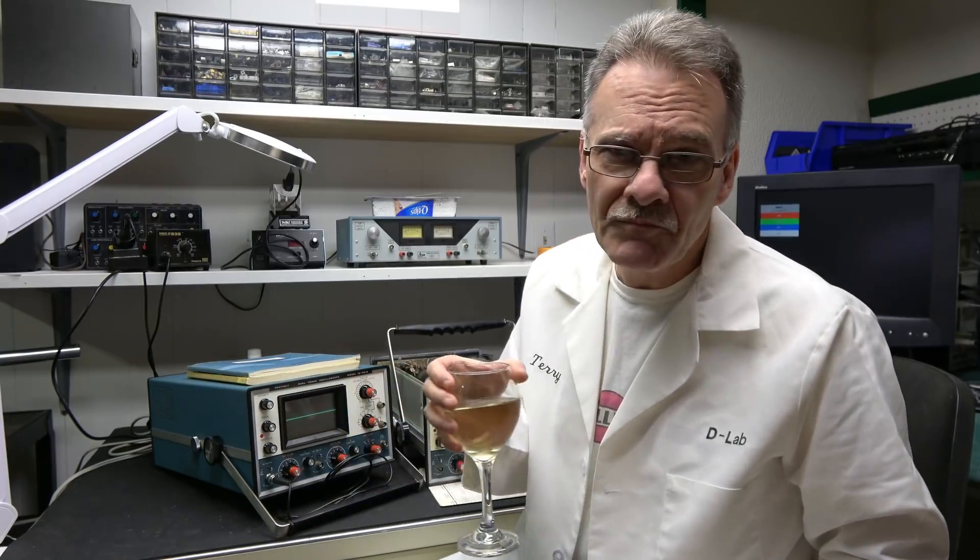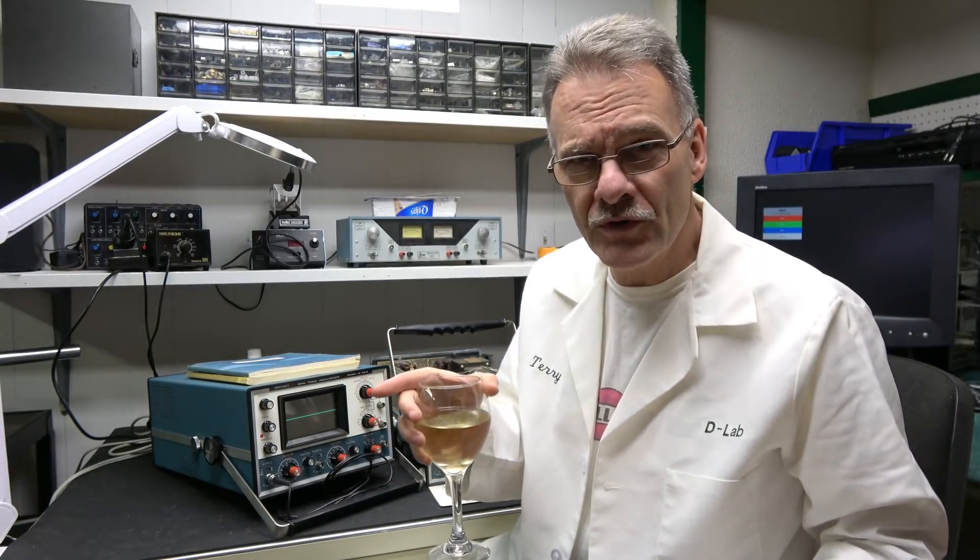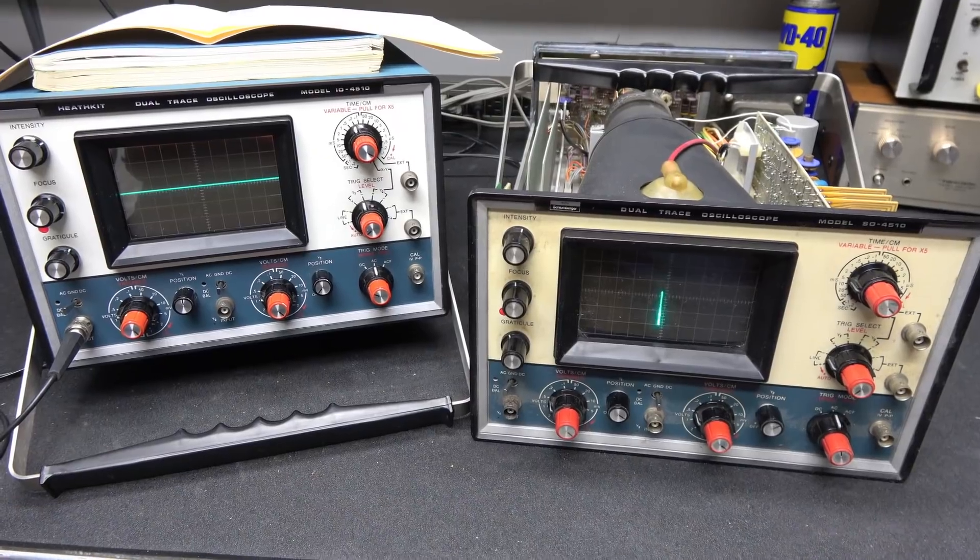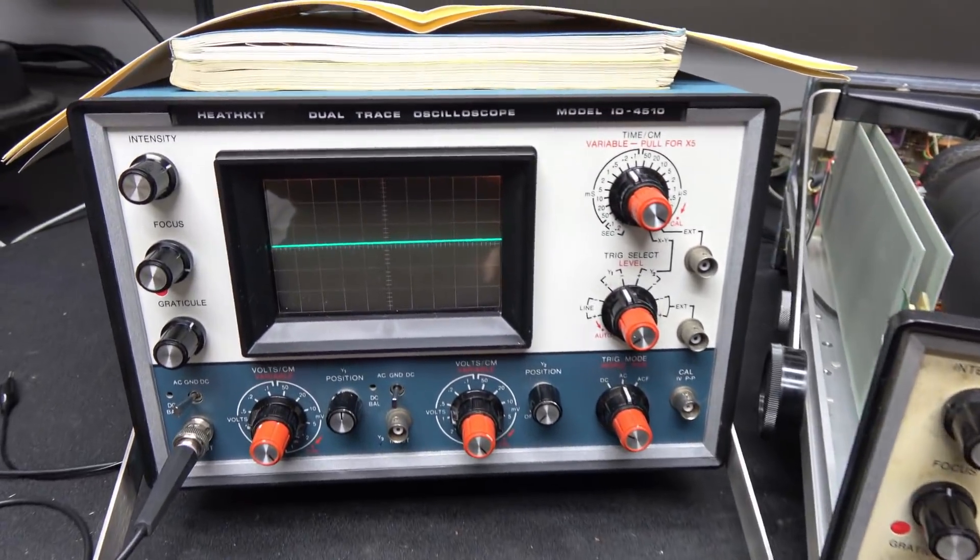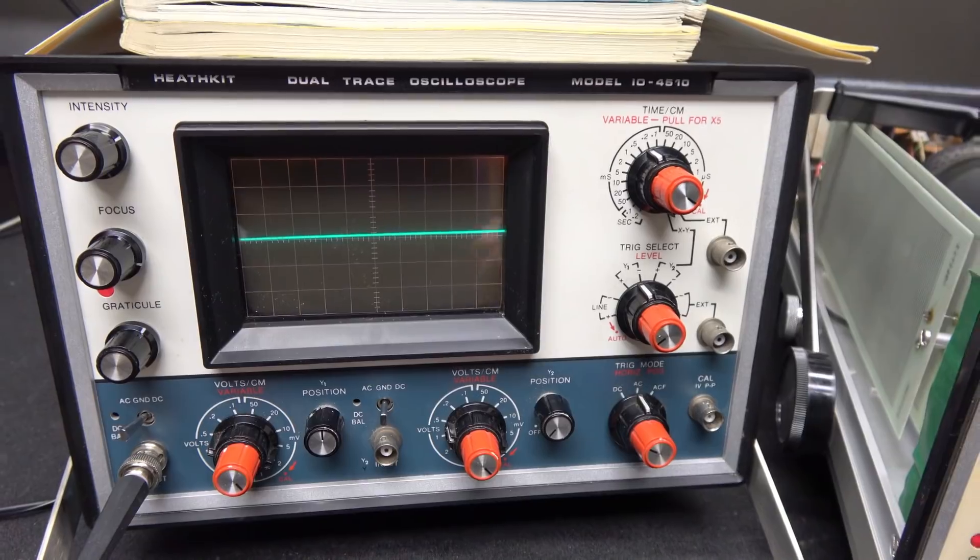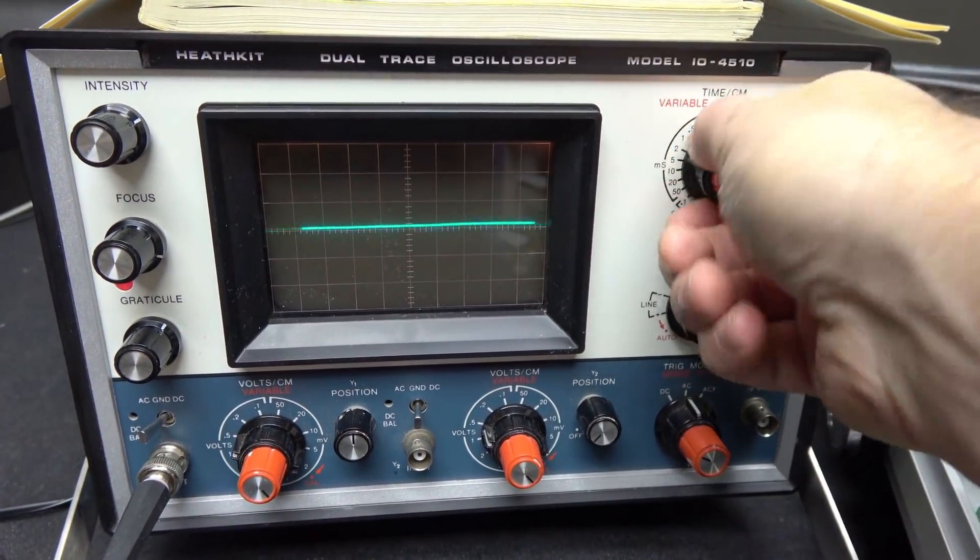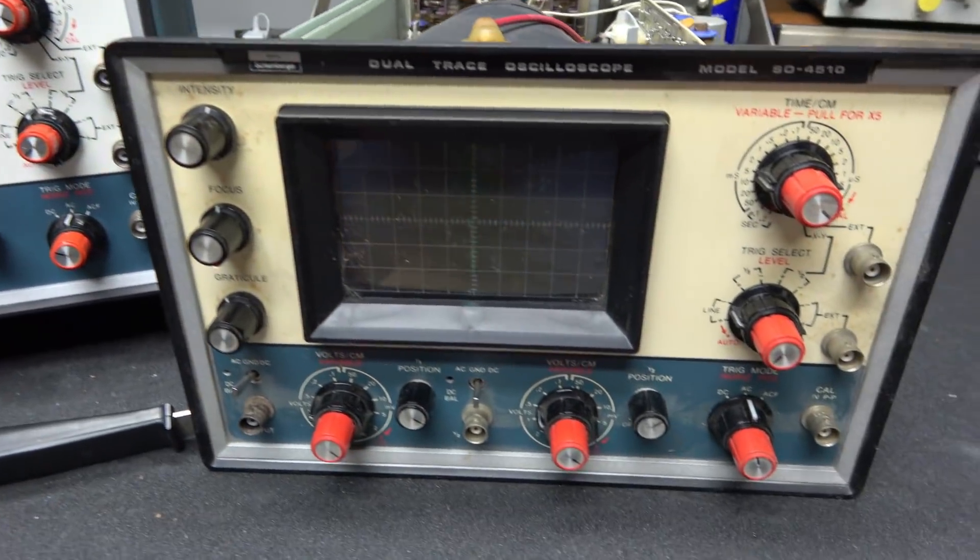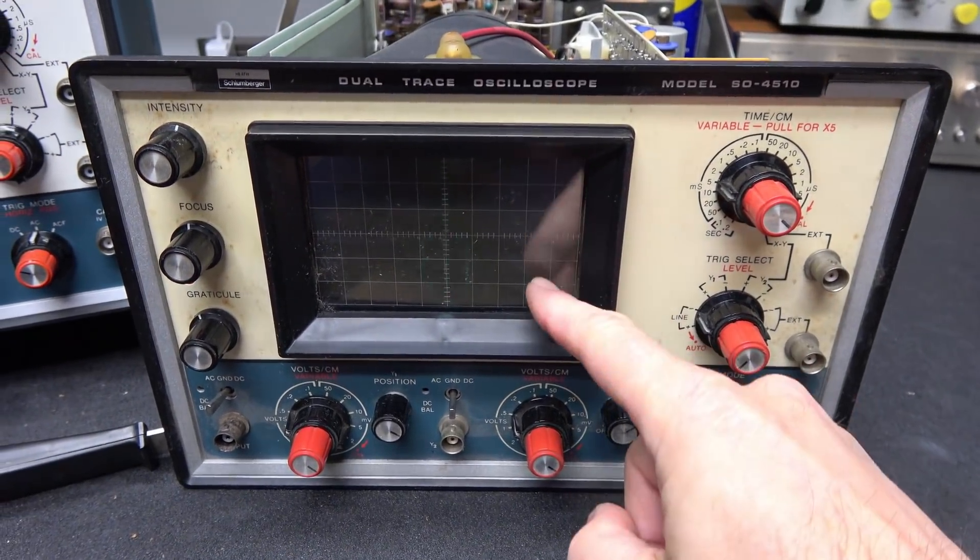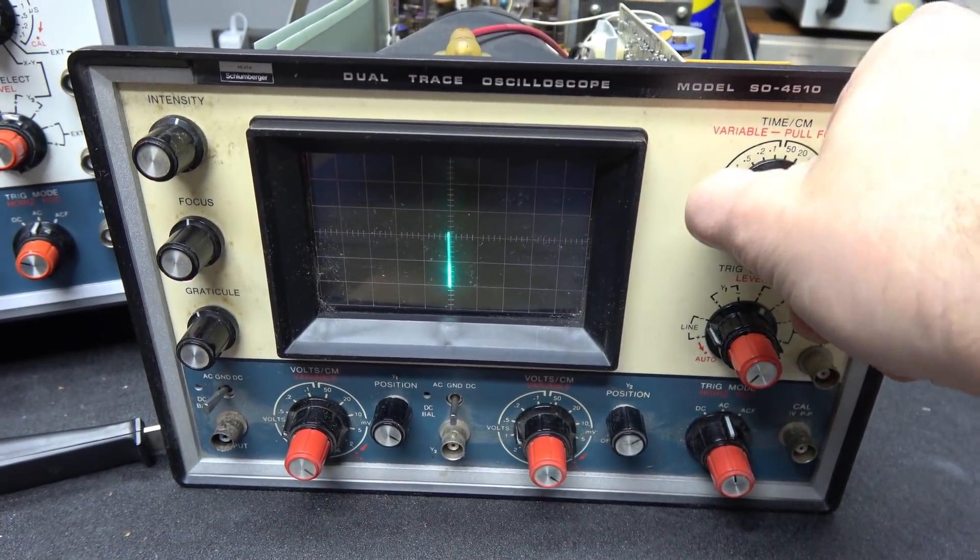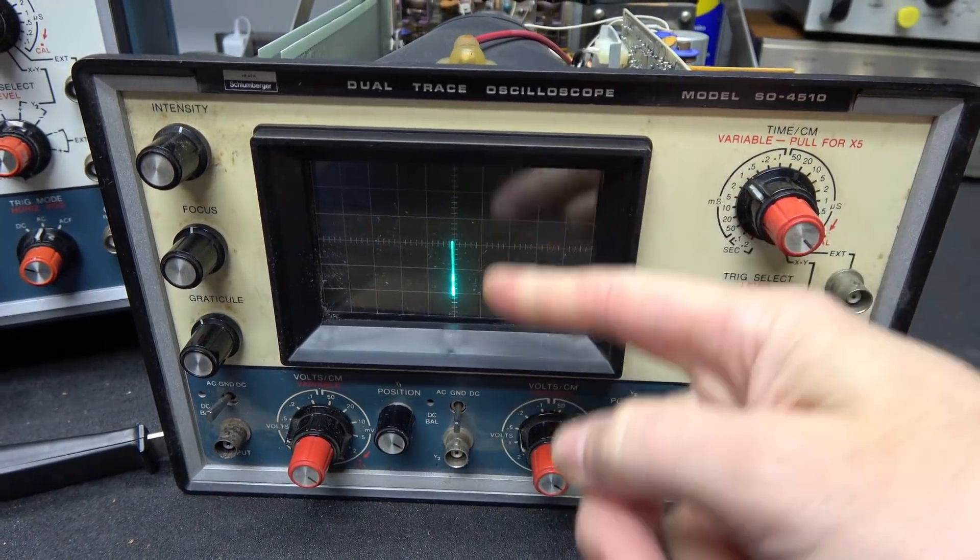So I'm going to use this scope to fix this scope. They're both the model 4510, dual trace 15 megahertz scope. In this first video, we're going to fix the horizontal section, and then in part two we'll fix the vertical. Here's the situation: if you take a look at this scope, you've got a nice trace across the screen. I have horizontal sweep sweeping across. However, if you look at this one, I have no horizontal sweep.